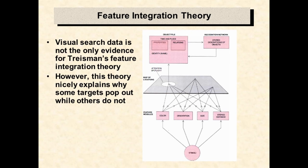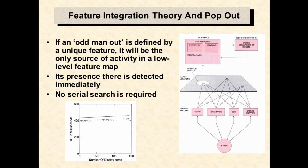There are many different kinds of evidence that have been used to develop and support feature integration theory. For the purpose of this class, let us only consider this theory in the context of visual search. Feature integration theory can be used to explain why some targets pop out while others do not. If a target pops out, then it is the only source of activity in a low-level feature map. So, if there is only one active location in one of these maps, the unique target can be detected without invoking any processes higher up in the model.